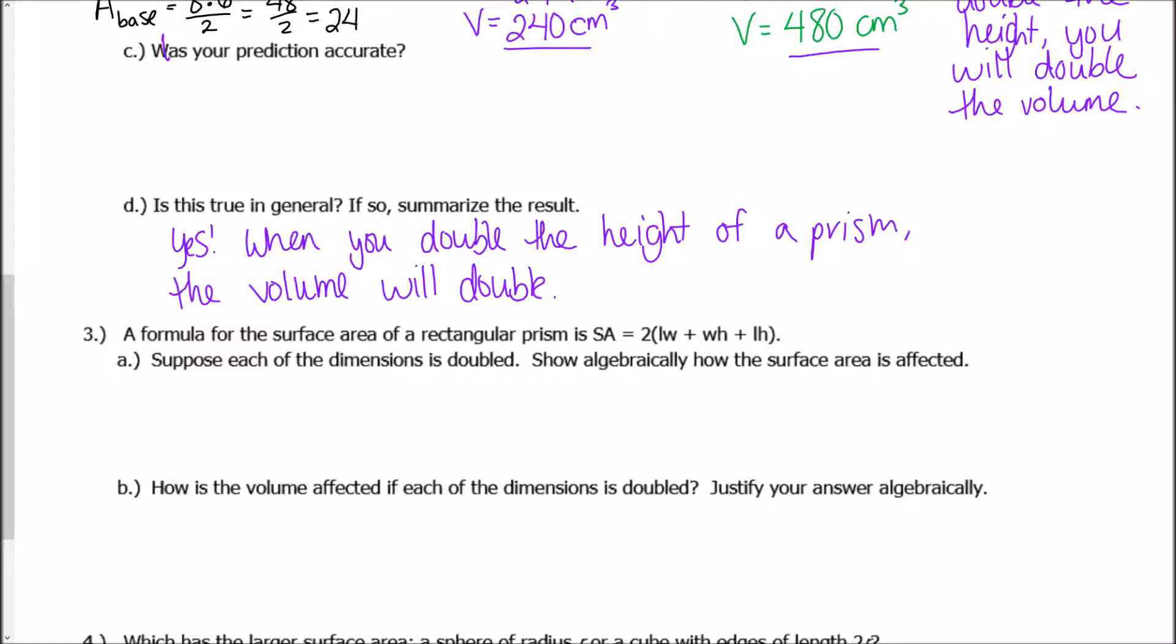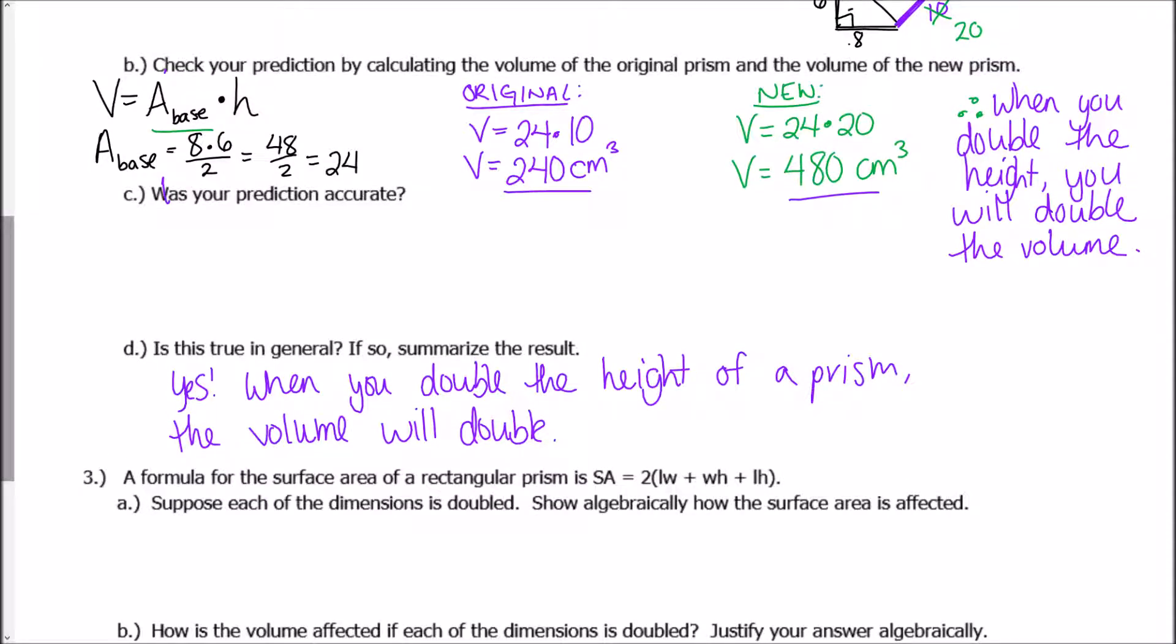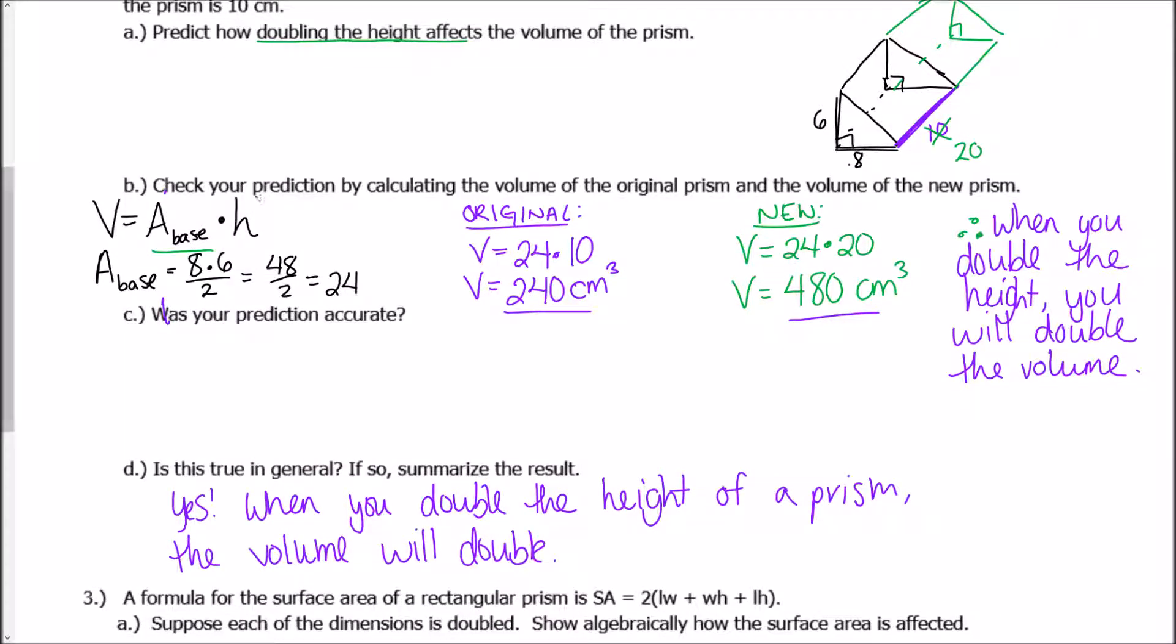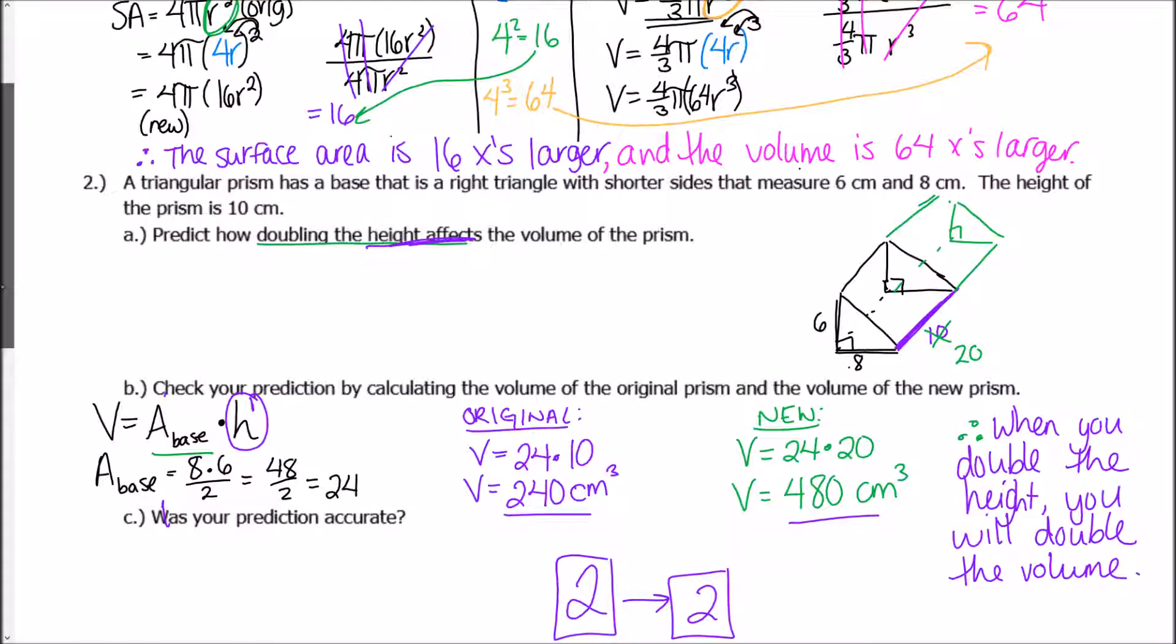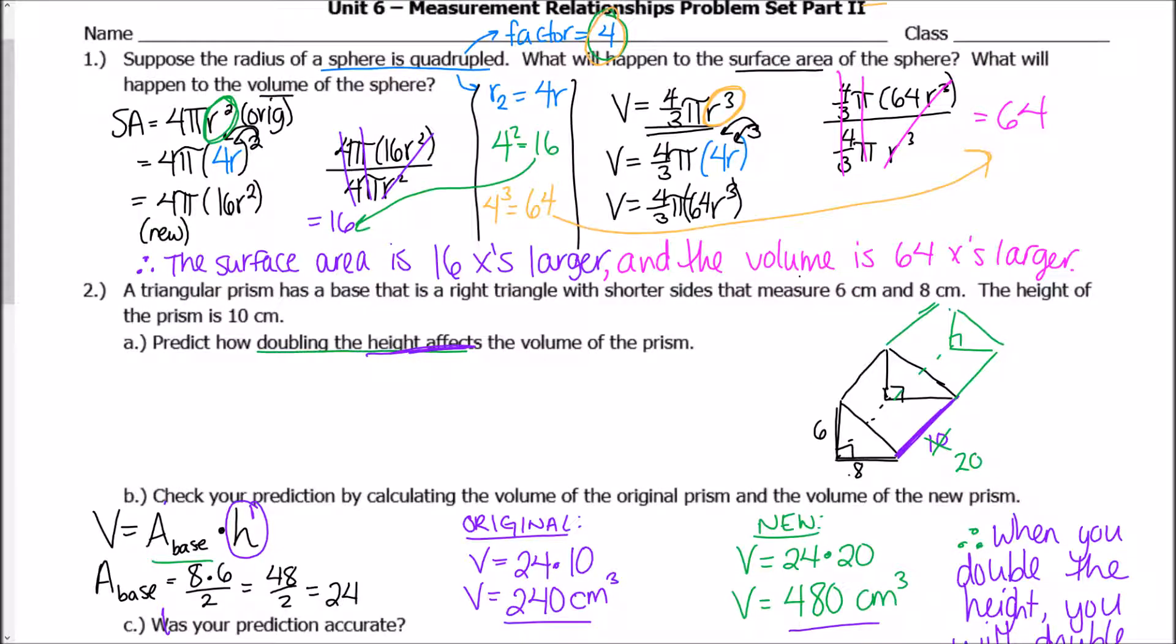Okay. Now one thing I want to make sure you guys understand is that because right here, this height is to the power of one, when our scale factor was two, originally for the height, if it was doubled, then the volume will also be two times bigger. Nothing's changing because this is to the power of one. However, up here, because this was squared, we squared the scale factor. And because this is cubed, we cubed the scale factor.